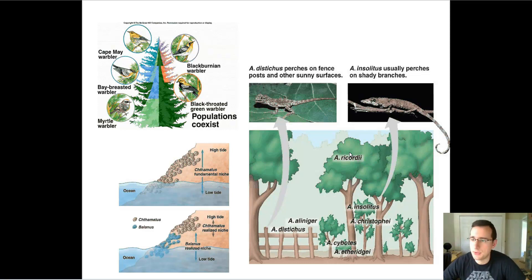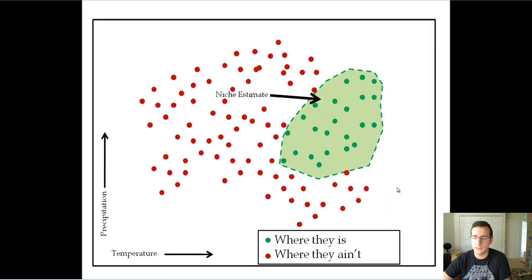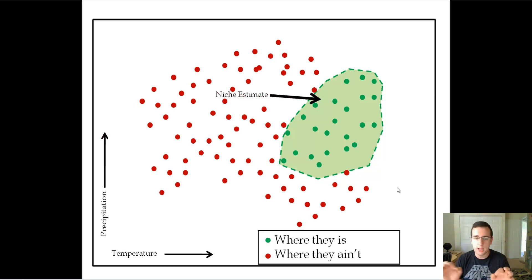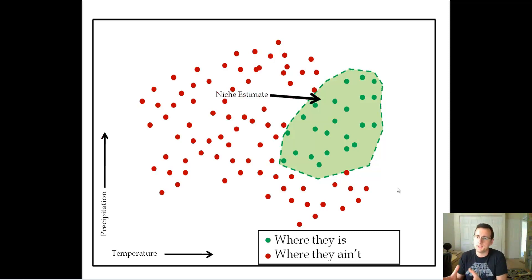You also see another example with mollusks on the intertidal zone. Animals will split up the resources — this is called resource partitioning. They split the resources available in the ecosystem depending on where they're best fitted. This means there's a concept of realized versus fundamental niche. The fundamental niche is everywhere the organism could possibly live. In this graph, all the dotted red areas represent where this animal could be within the two factors of precipitation and temperature.